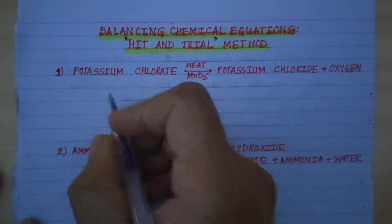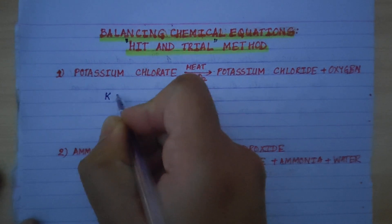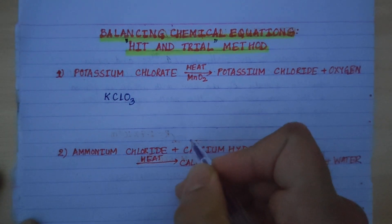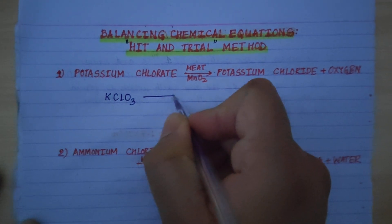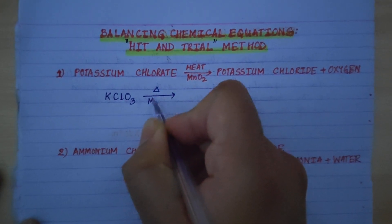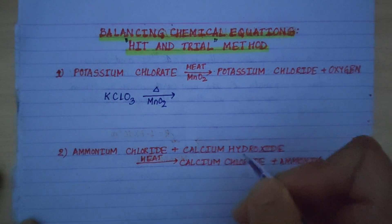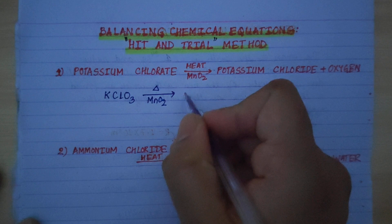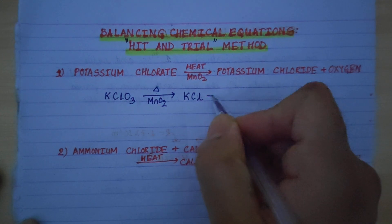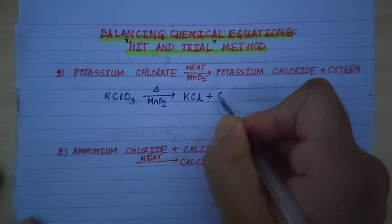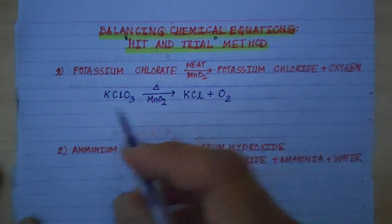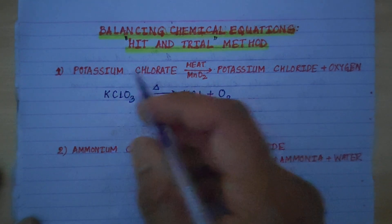Potassium chlorate is KClO3. With application of heat — heat is represented by a triangle sign — and MnO2 as catalyst. It gives potassium chloride, KCl, plus oxygen. Oxygen is a diatomic gas, so we write O2. Now the second step is we have written the skeletal chemical equation from the word equation.